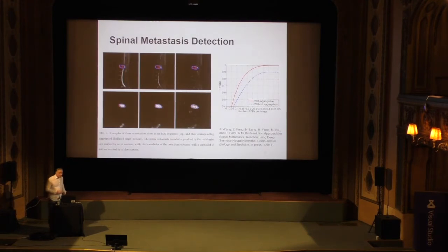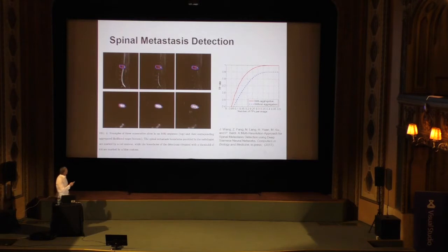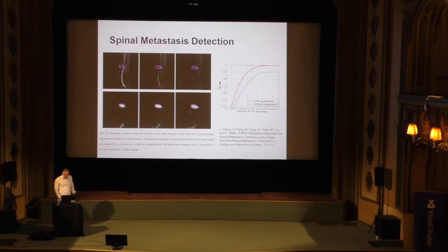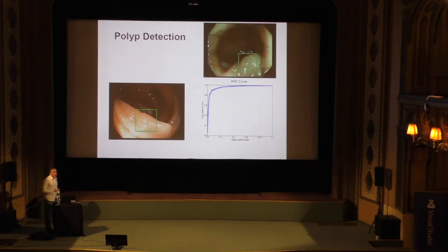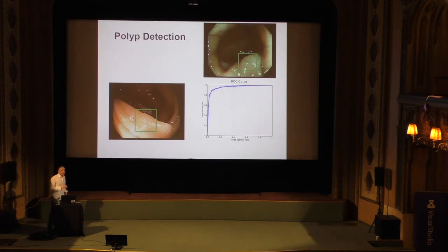Another application is detection of metastasis in the spine. Most cancers, when they metastasize, tend to go to the spine, so it's very important to reliably detect cancer there — again using convolutional neural networks. The last example is colonoscopy, where you want to detect polyps and classify them as premalignant, malignant, etc. The area of the colon is about the size of a tennis court, and the colonoscopy takes only four or five minutes, so it's very hard for a doctor to examine every corner.